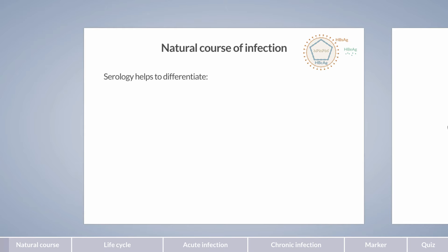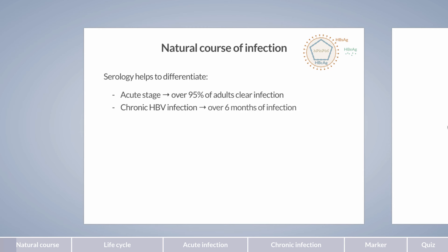Let's start with an overview of the phases. In adults, hepatitis B virus infection begins with an acute stage. More than 95% of affected adults will subsequently recover from infection, and less than 5% of cases progress to a chronic stage. Chronic hepatitis B virus infection is defined as persistent infection for at least 6 months.